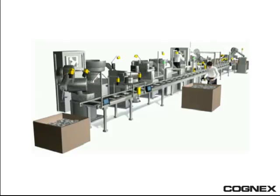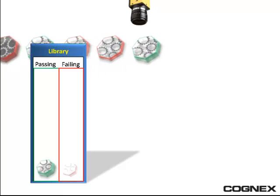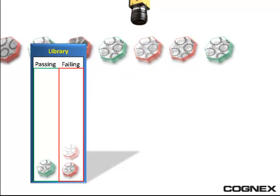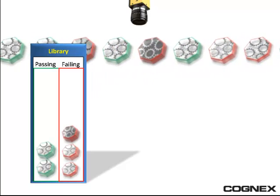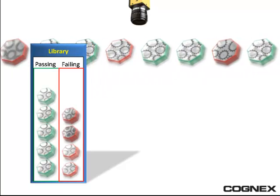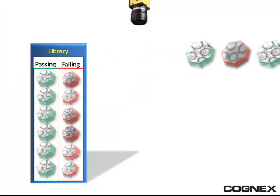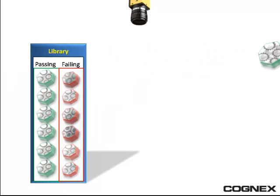Here's how it works: the vision designer takes images from the line and categorizes them as passing or failing parts. This creates a library in Test Run, and the designer uses this library as a baseline of what defines a passing or a failed part.